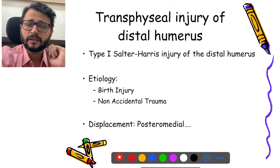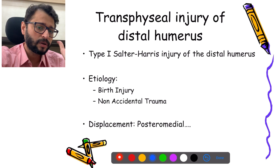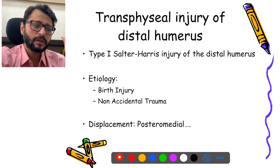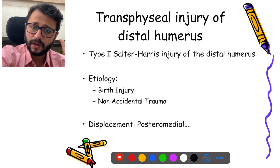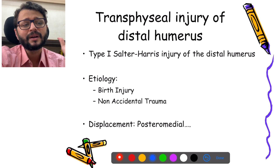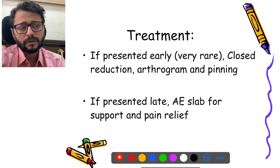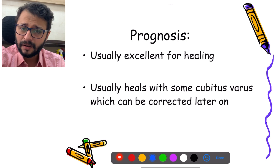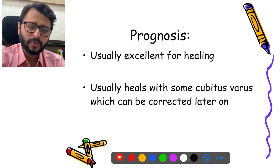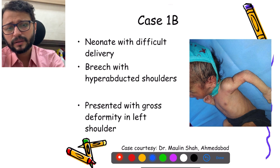This is not an elbow dislocation — this is called a transphysial injury of the distal humerus, a Type 1 Salter-Harris injury. The typical etiology is birth injury. If you see any x-ray with posteromedial displacement in a neonate, it is almost always a transphysial injury. Treatment is usually just a closed reduction and a slab for pain relief. It has excellent remodeling and healing potential, usually healing with a mild cubitus varus which can be corrected later.